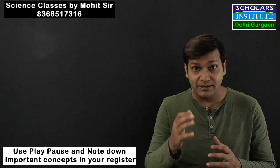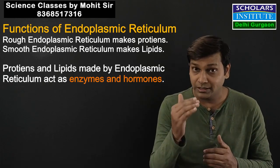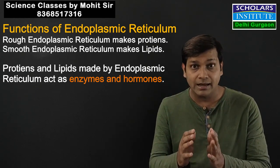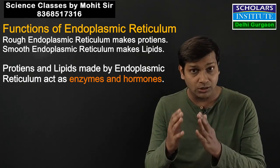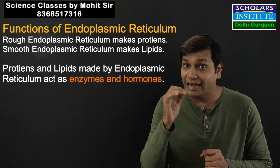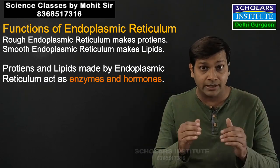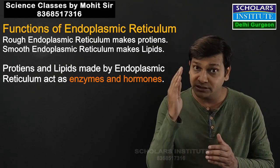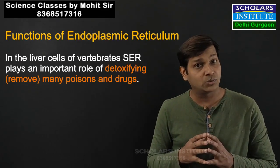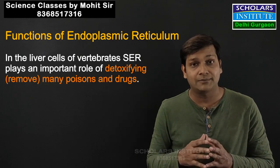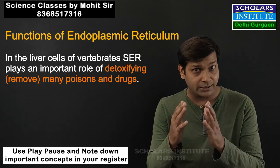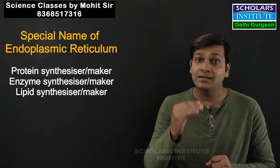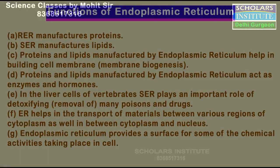The proteins and lipids produced by the endoplasmic reticulum include enzymes. Enzymes are biocatalysts — catalysts which increase the speed of chemical reactions. The endoplasmic reticulum also plays a role in detoxification; for example, in vertebrates, the liver uses the smooth endoplasmic reticulum to help break down toxic substances.